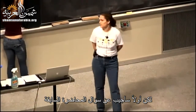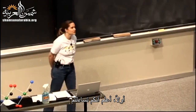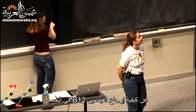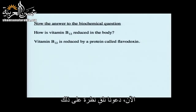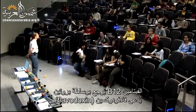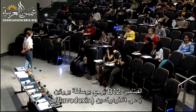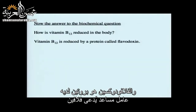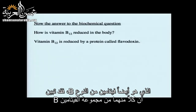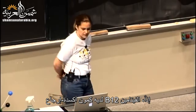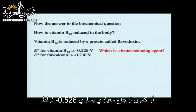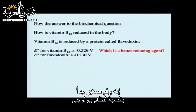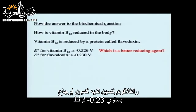First, I want to answer the question from last time. I know you've all been wondering about how vitamin B12 is reduced in the body. Vitamin B12 is reduced by a protein called flavodoxin. Flavodoxin is a protein that has a cofactor which is a flavin — also a vitamin B. Vitamin B12 has a standard reduction potential of minus 0.526 volts, which is a very low number for a biological system. Flavodoxin has a potential of minus 0.23 volts.